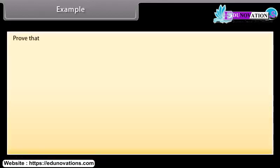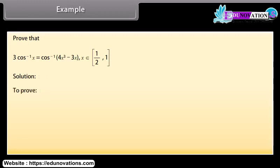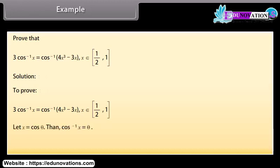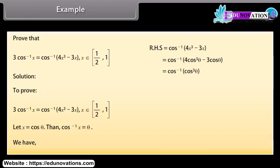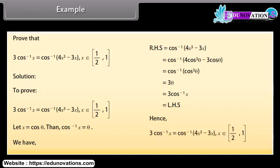Example: Prove that 3cos⁻¹ x = cos⁻¹(4x³ − 3x) for x ∈ [1/2, 1]. Solution: Let x = cos θ, so θ = cos⁻¹ x. Then cos⁻¹(4x³ − 3x) = cos⁻¹(4cos³θ − 3cosθ) = cos⁻¹(cos 3θ) = 3θ = 3cos⁻¹ x, which equals the left-hand side. Hence 3cos⁻¹ x = cos⁻¹(4x³ − 3x) for x ∈ [1/2, 1].